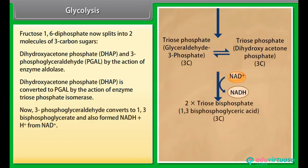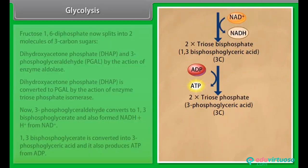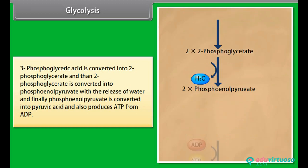3-phosphoglyceraldehyde converts to 1,3-bisphosphoglycerate and also forms NADH+H⁺ from NAD⁺. 1,3-bisphosphoglycerate is converted into 3-phosphoglyceric acid and it also produces ATP from ADP. 3-phosphoglyceric acid is converted into 2-phosphoglycerate, then into phosphoenolpyruvate with the release of water. Finally, phosphoenolpyruvate is converted into pyruvic acid and also produces ATP from ADP.